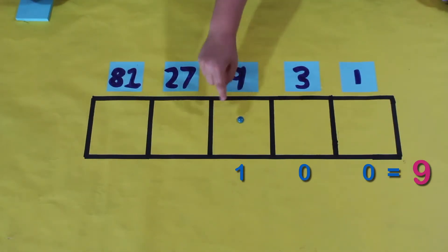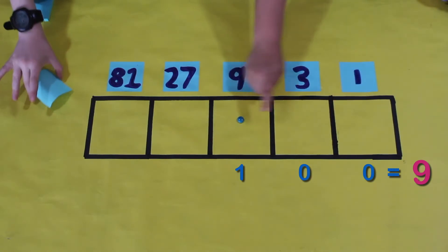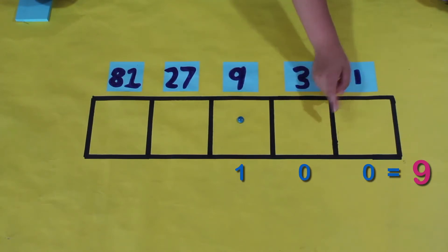So there's only one dot in this box, which means there's only one nine, and there are no threes and no ones. So that would be nine plus zero plus zero, which is nine, the number we started with.